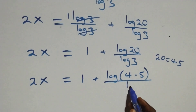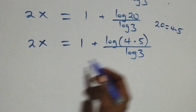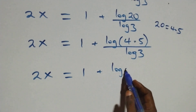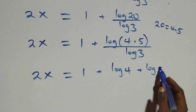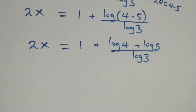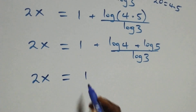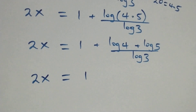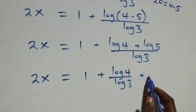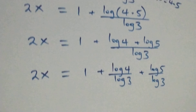This gives two x equals one plus log of four times five, all over log three. Again applying the law of logarithms, we have two x equals one plus log four plus log five, all over log three. Separating into two fractions: two x equals one plus log four over log three plus log five over log three.